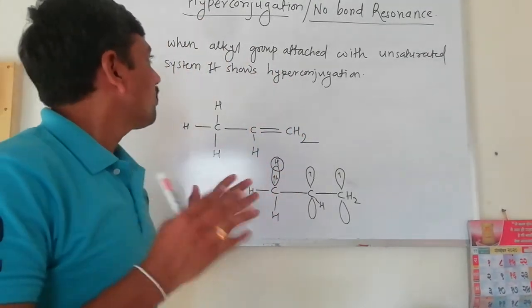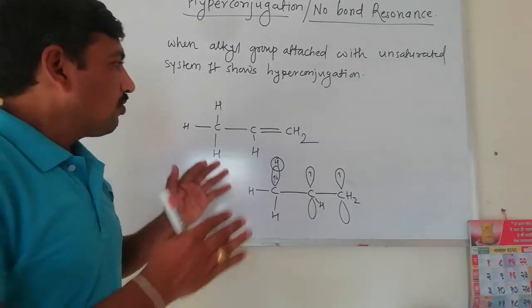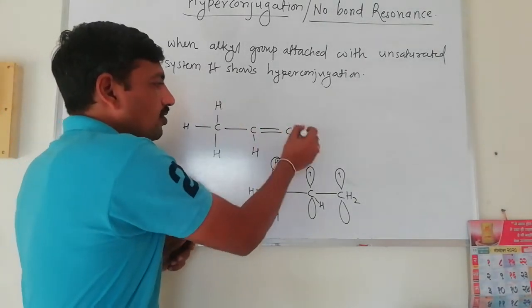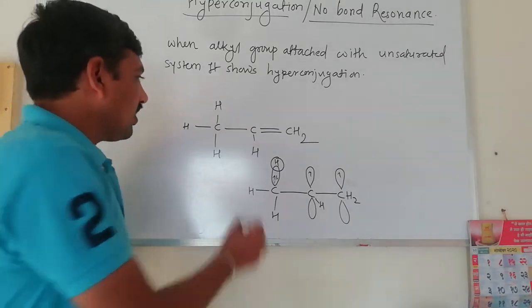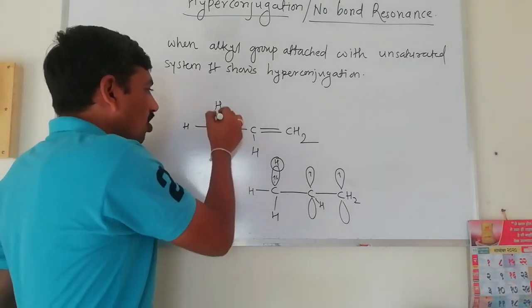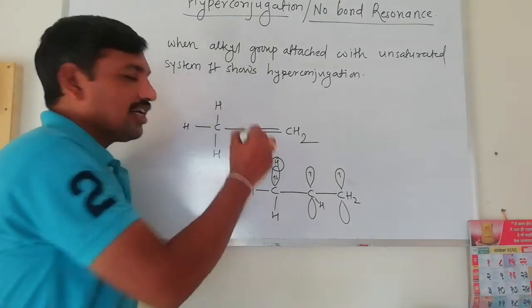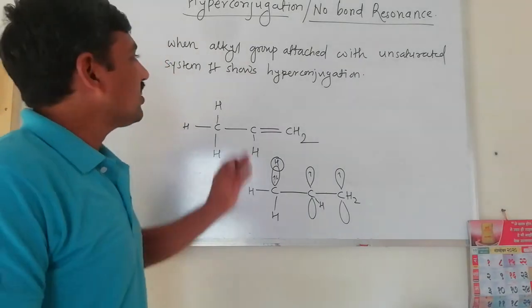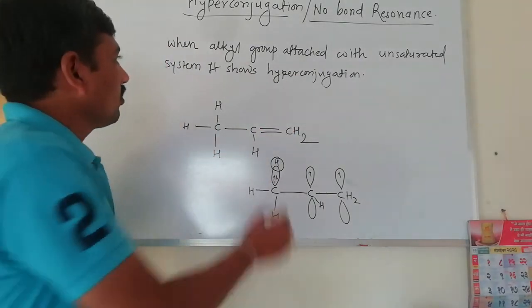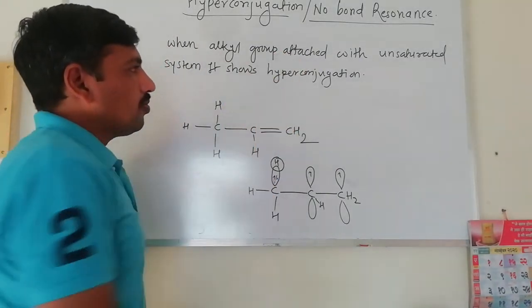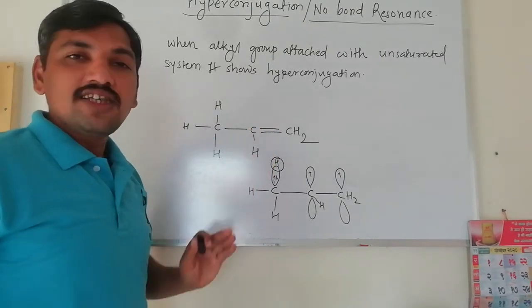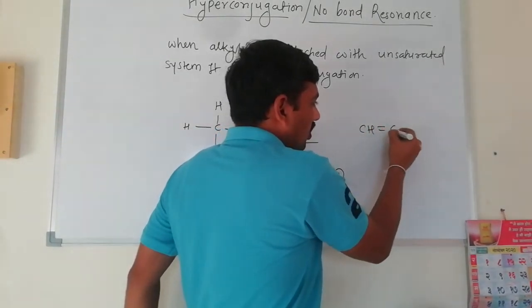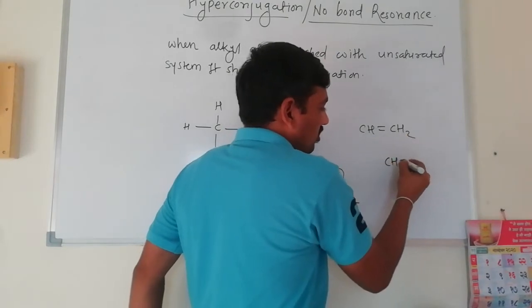So what is hyperconjugation? When an alkyl group is directly attached with an unsaturated system, then the sigma bond of the alkyl group directly involves into conjugation — it is called as hyperconjugation. Unsaturated system means a double bonded or triple bonded system.